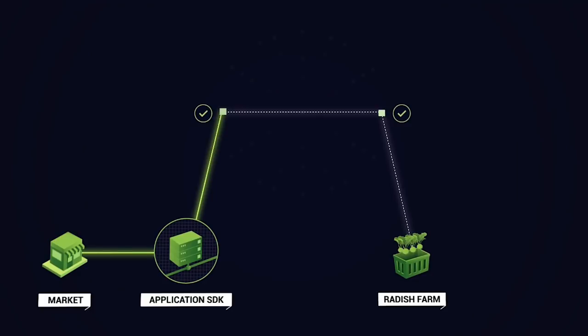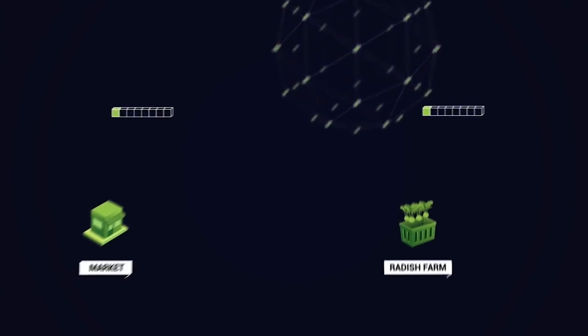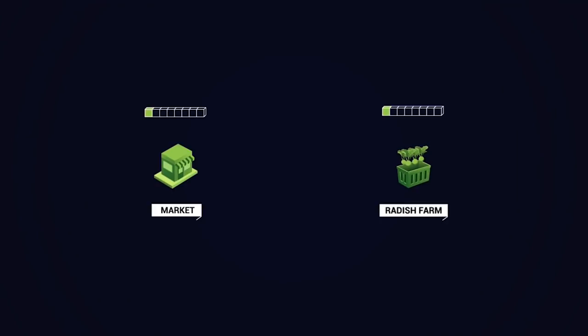Then the peers send the validated transaction back to the application, which sends it to a consensus cloud for ordering. And then the ordered transactions are sent back to the peers and committed to the ledger.